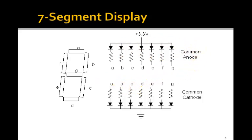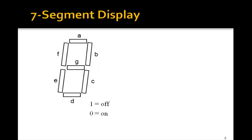So ours are going to be common anodes. So let's see how we can do it. A zero is going to turn it on. And so let's figure out how to make all of the 16 hex digits.